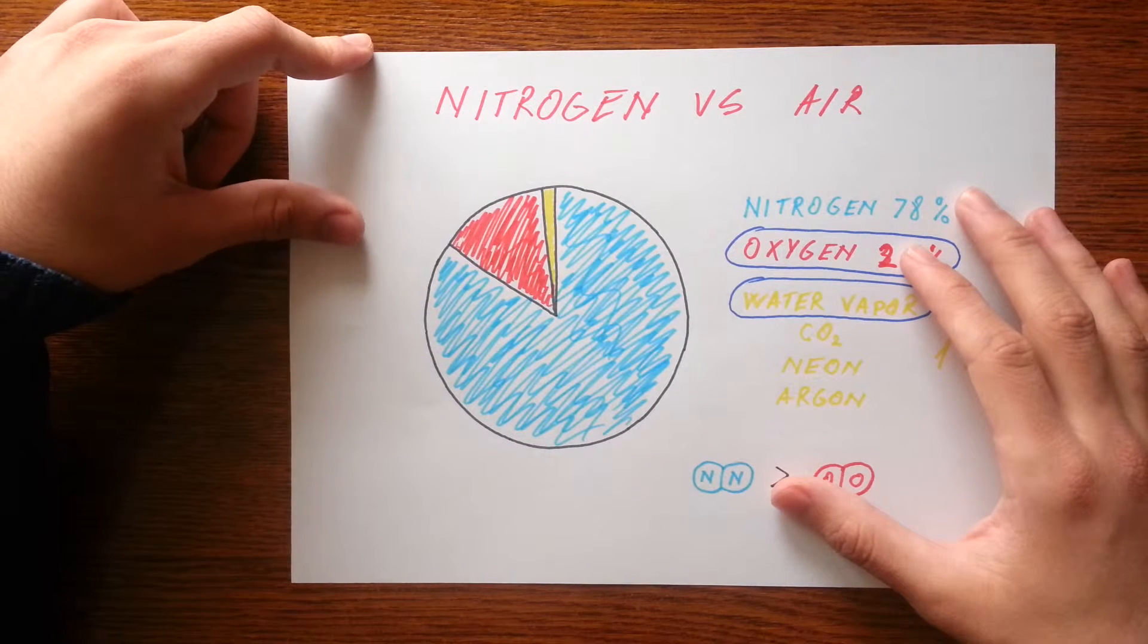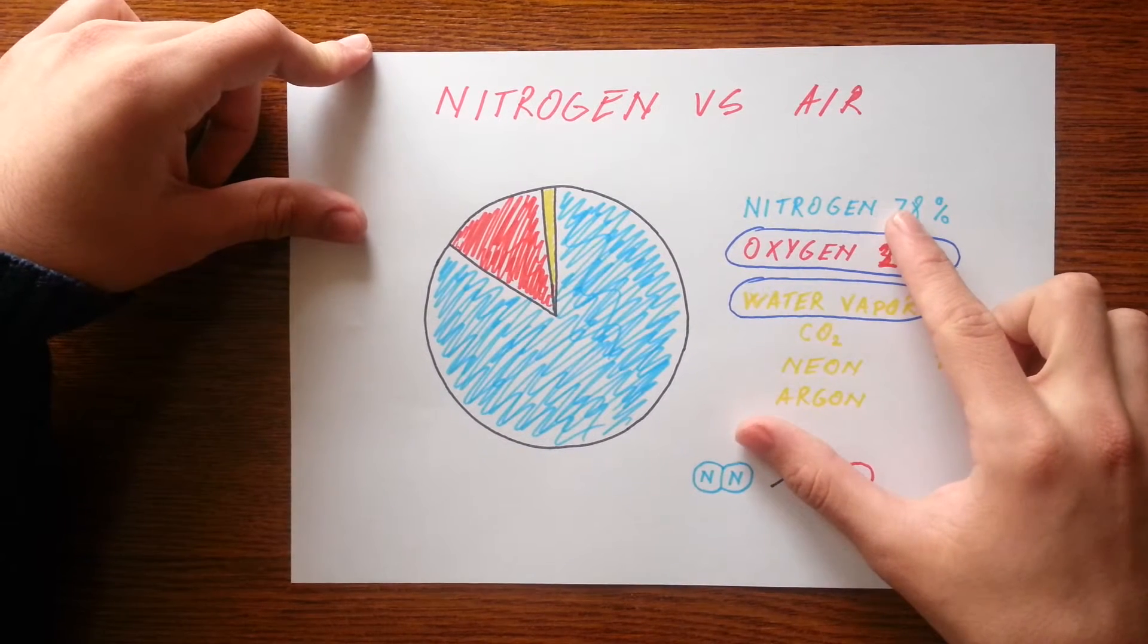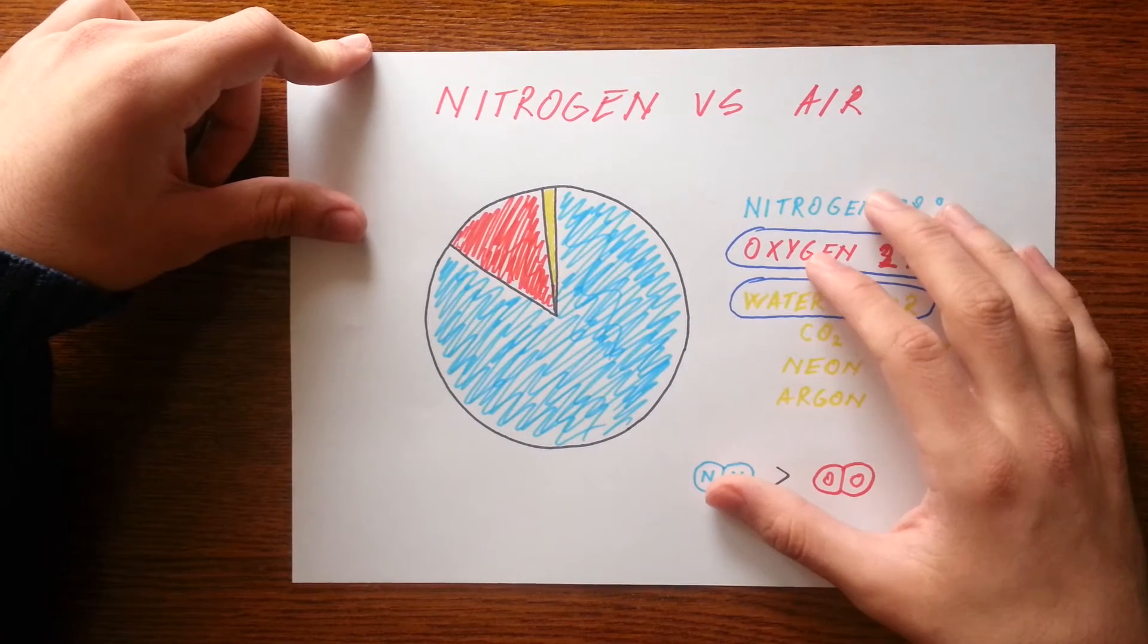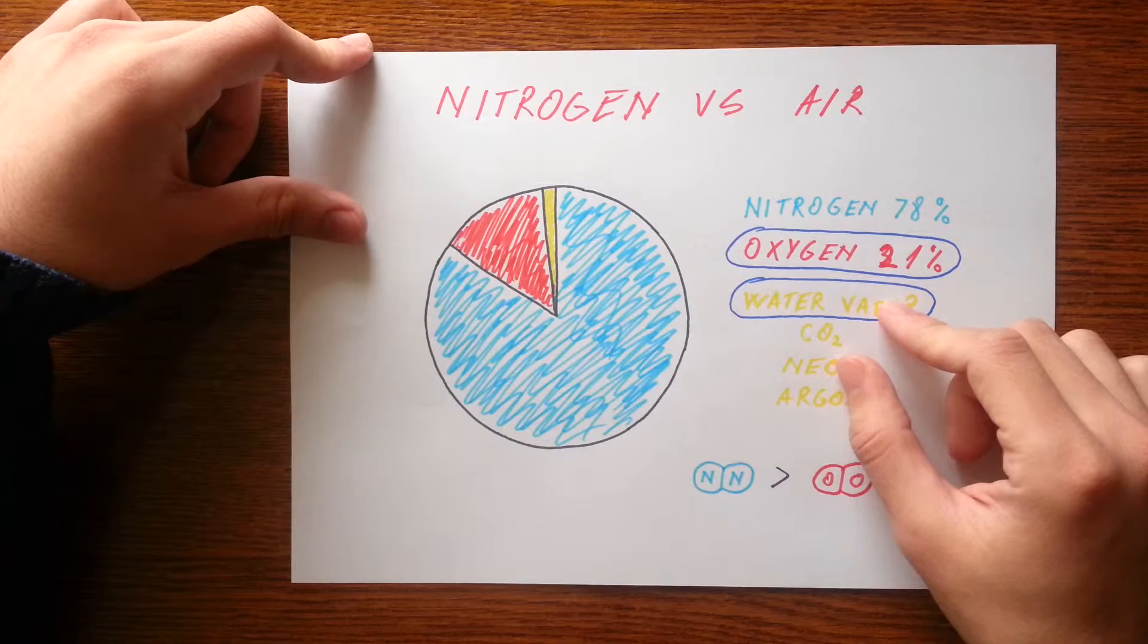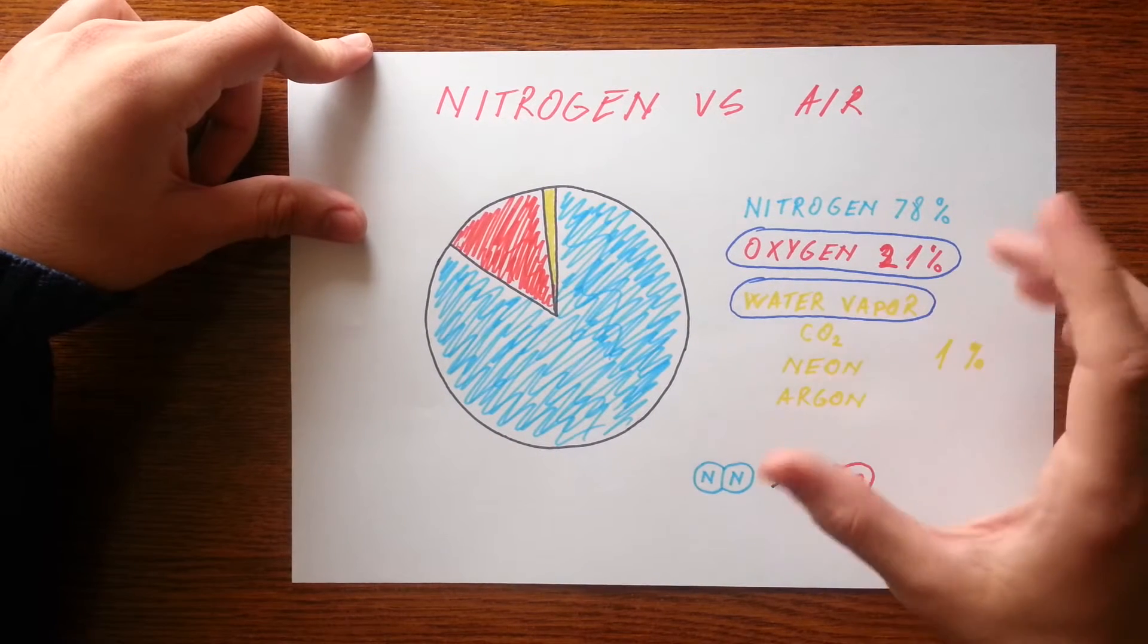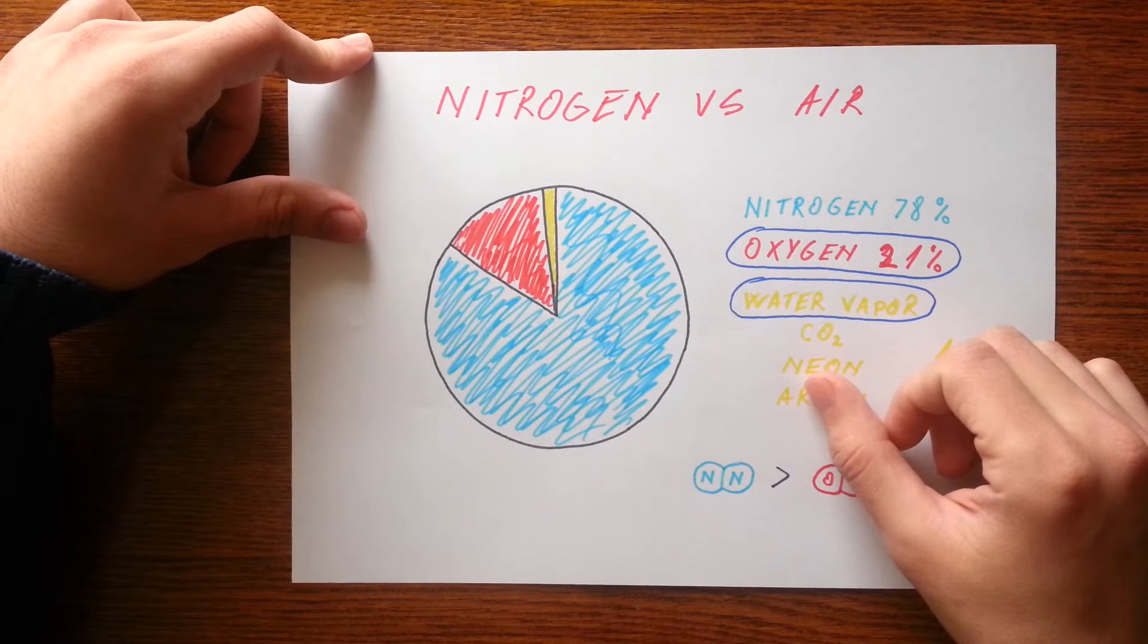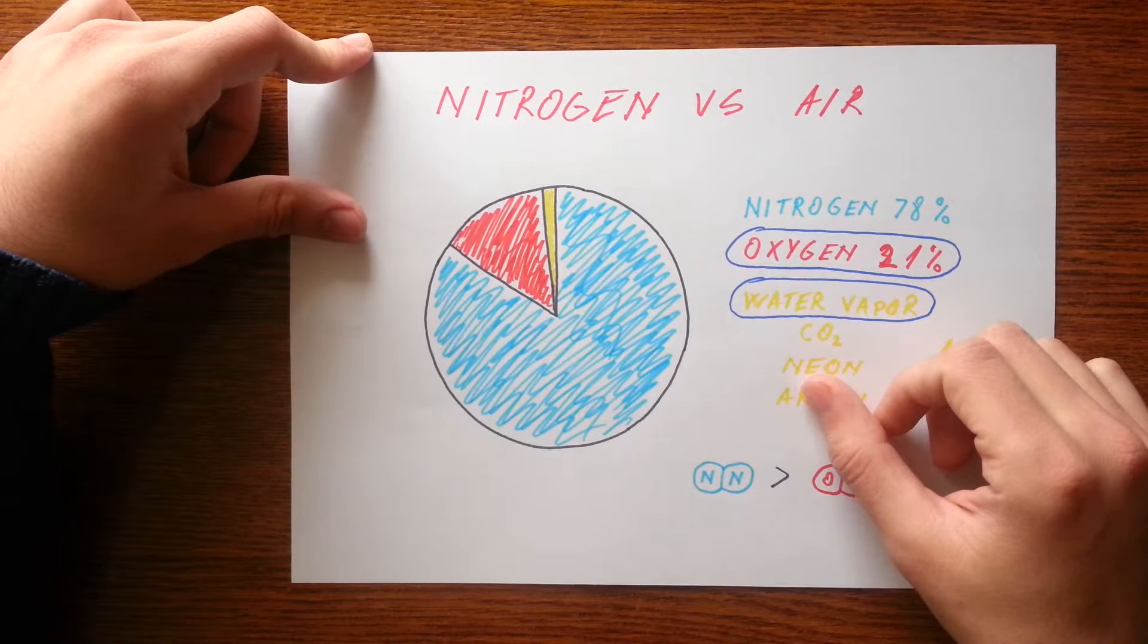Filling the tires with nitrogen removes another dangerous element of air: water vapors. As the tire heats up under use, its pressure increases, and the unknown water content will make this increase unpredictable. It also promotes corrosion of the steel or aluminum rim.